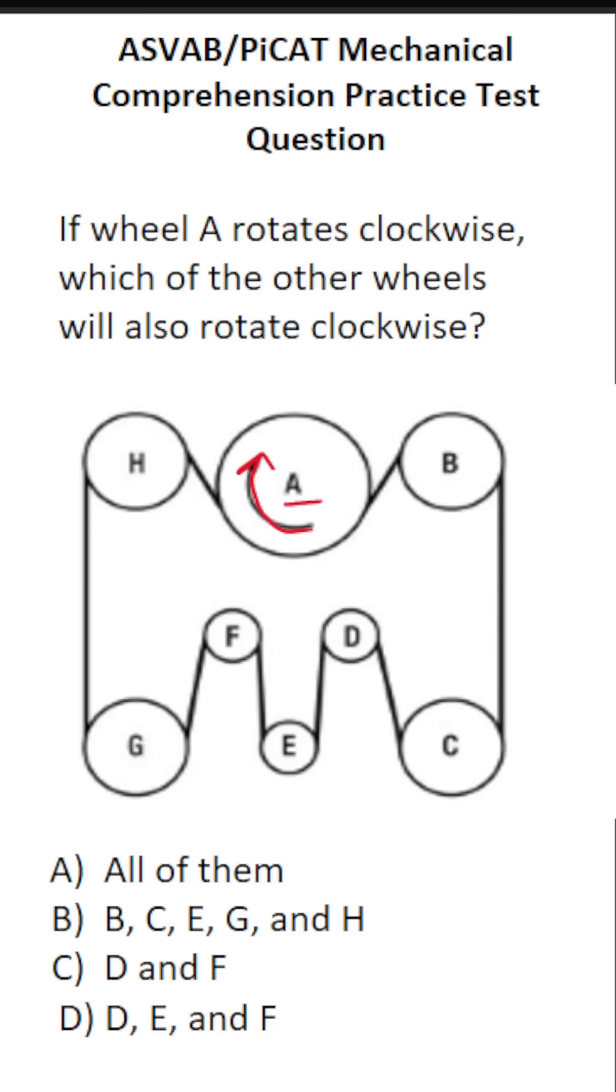In order for wheel A to rotate that way, that means this belt is moving in this direction. With that in mind, we can find out the direction in which these other wheels are rotating.